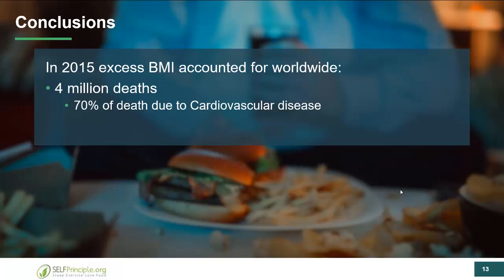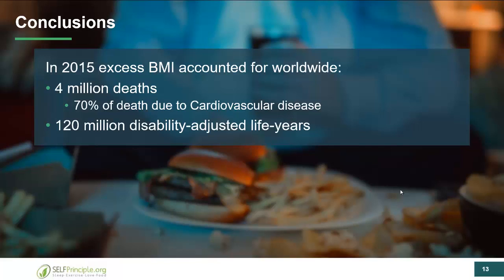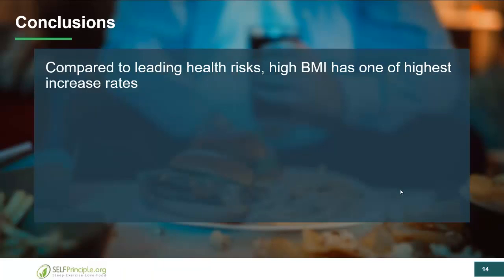The bottom line is that excess BMI accounted for 4 million deaths in 2015, and 70% of those deaths were due to cardiovascular disease — a condition where we have many good treatments and where lifestyle makes a tremendous impact on lowering risk. In terms of disability, there are 120 million disability-adjusted life years — a huge amount of suffering that can be lowered, reduced, and prevented through taking better care of ourselves.